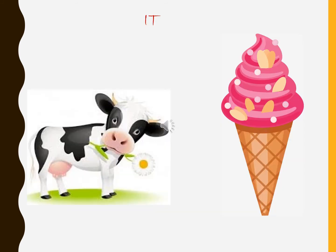The pronoun 'it' is used with animals and with things. In the first picture we can see a cow — cow is an animal, and with animals the pronoun used is 'it'. It is a cow, or it is a fat cow. Second picture: a yummy ice cream. Ice cream is a thing, and with things the pronoun used is 'it'. It is a yummy ice cream.